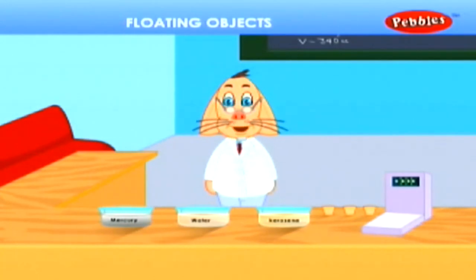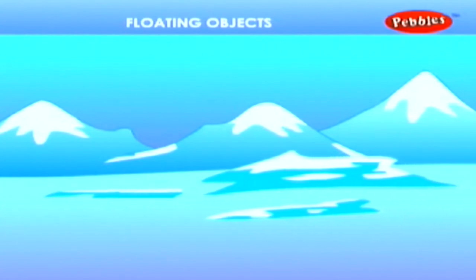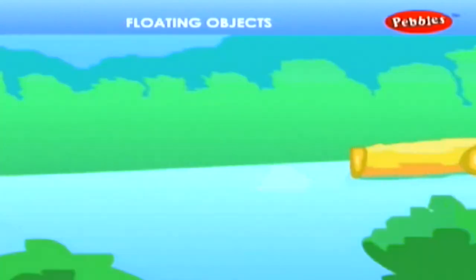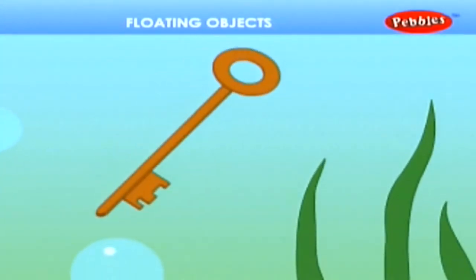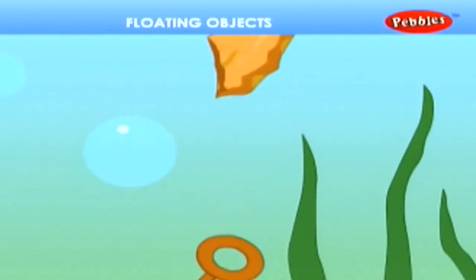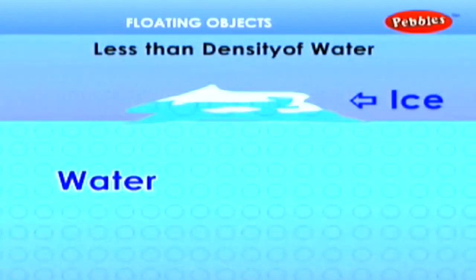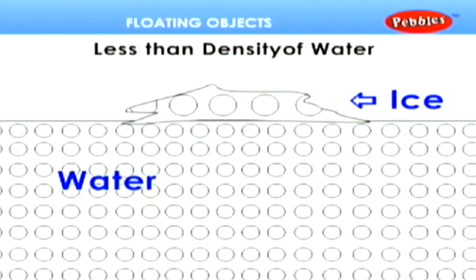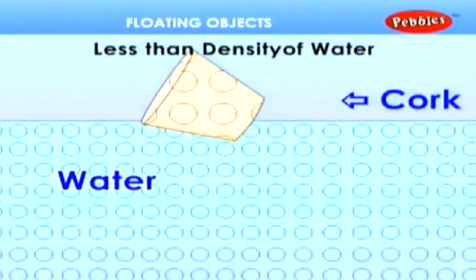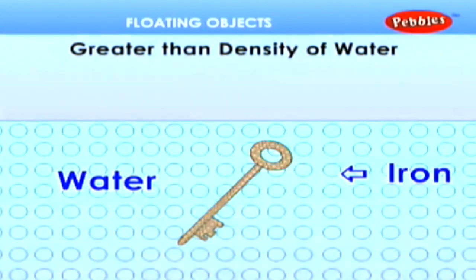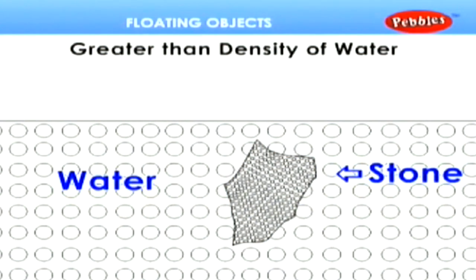Floating objects. You must have observed that certain objects like ice, cork, wood, etc. float in water. But certain objects like iron, stone, etc. sink in water. Only those objects float in water whose density is less than that of the water. If the density of an object is greater than that of water, the object sinks in water. For example, iron.